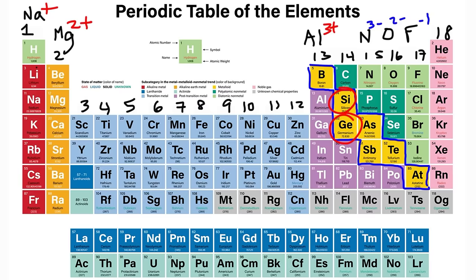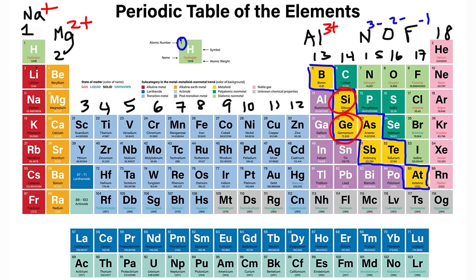The letter in each box represents the symbol of the element — H stands for hydrogen. The top number is the atomic number, which is the same as the number of protons and identifies the element. The bottom number is a decimal value representing the atomic weight, or more specifically, the average atomic mass of that element in its natural state on Earth.